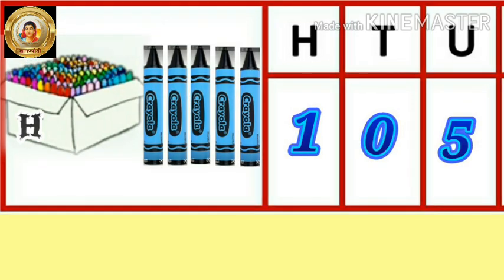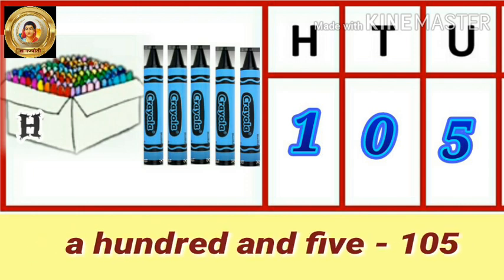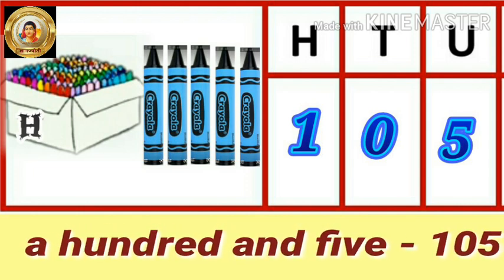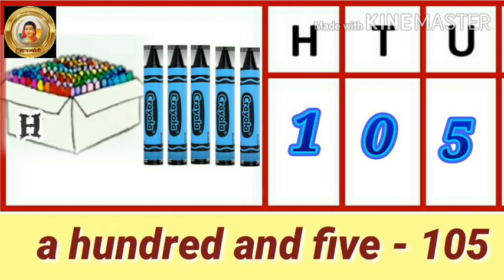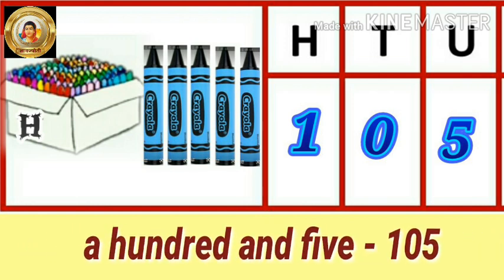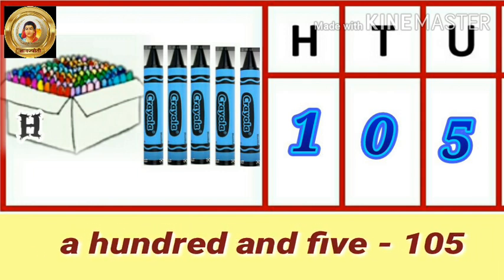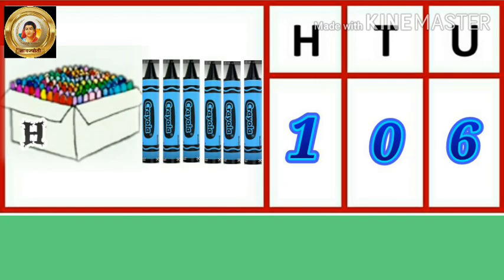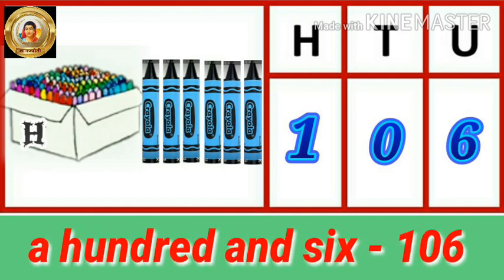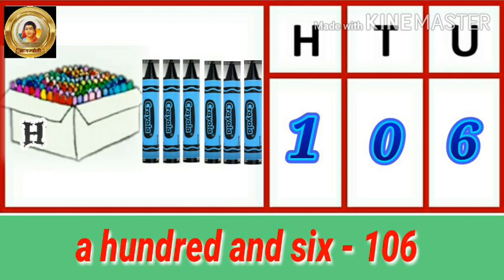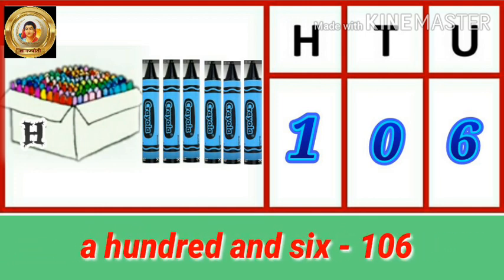So in this way we will read our next numbers. Read this number after me: a hundred and five — that is one zero five. How do you read this number? Yes, a hundred and six — means one zero six.